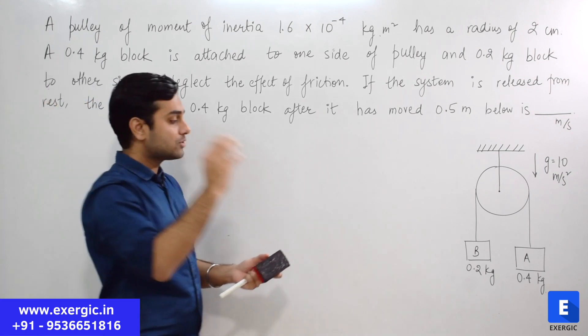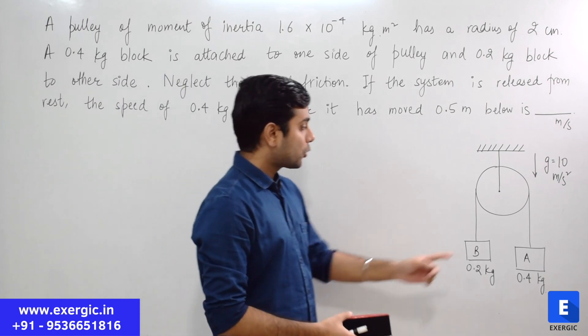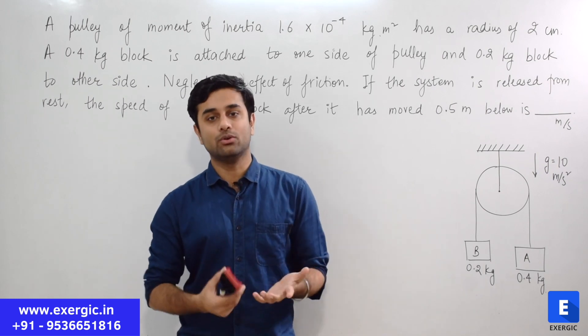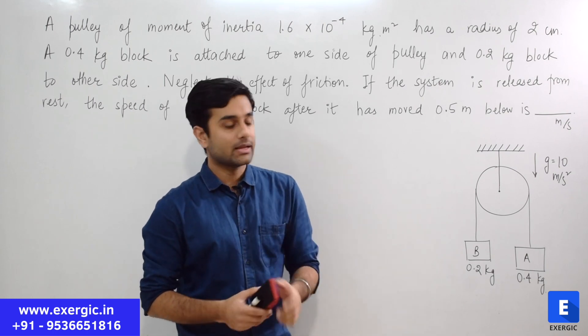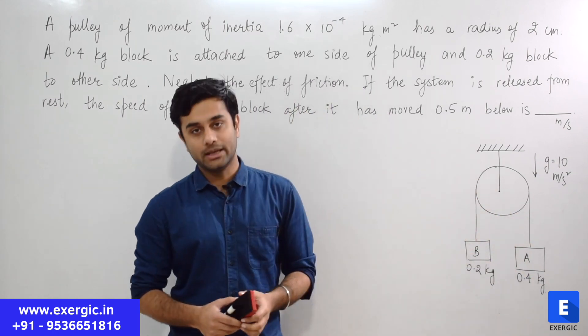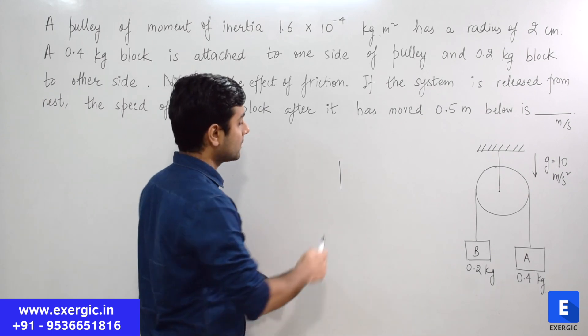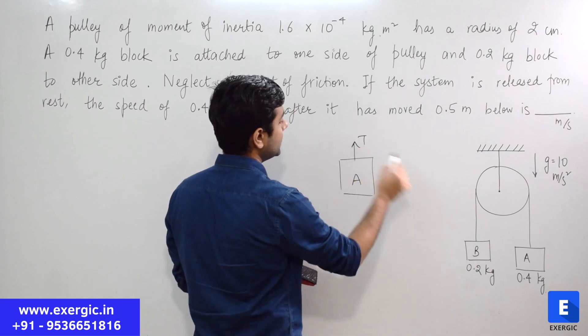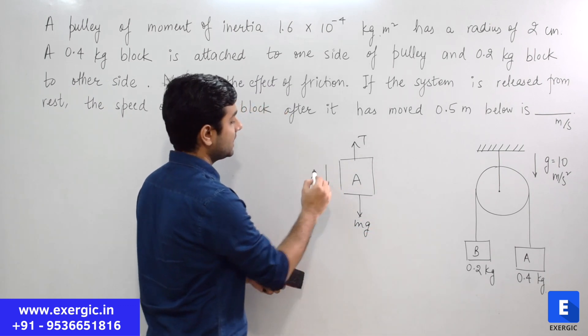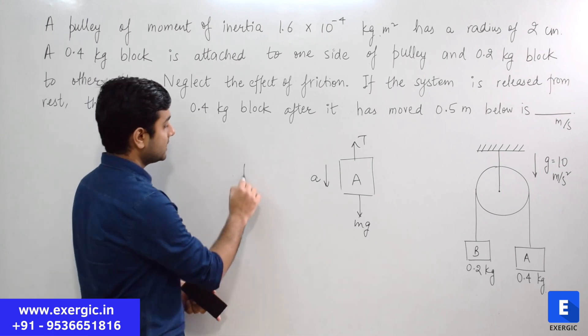Now let me tell you what many aspirants will do, the incorrect approach. They will draw the free body diagrams of A and B which is very much fine, and they will assume that since the rope, this string is same throughout, they will assume that the tension will remain same because that is what we know. If string is same, tension is going to be same. So they will assume that here also for block A tension is T, for B also tension is T. And then what they will do?